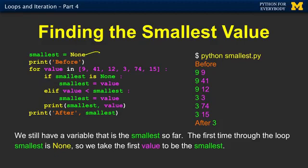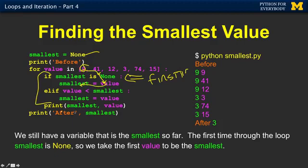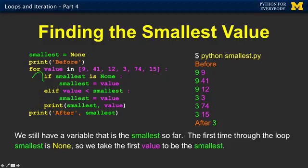Then in the code we have a little bit more intelligence. If smallest is none, this means it's the first time. If the smallest is none, smallest equals value. Nine is coming in here. So if the smallest we've seen so far is empty — we have seen nothing — we'll grab the first one as the smallest one. So nine becomes the smallest one, and that's how we print out: the smallest so far is nine, we just saw nine.